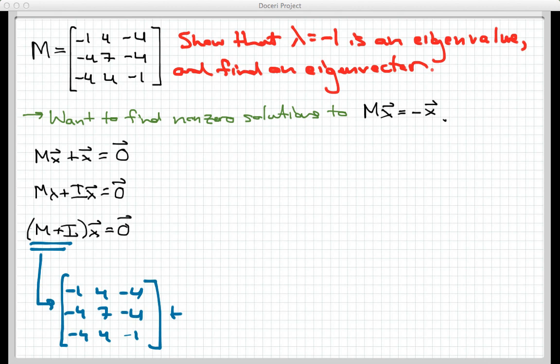The identity matrix is, of course, 1, 0, 0, 0, 1, 0, 0, 0, 1. And adding those two matrices together gives us the following.